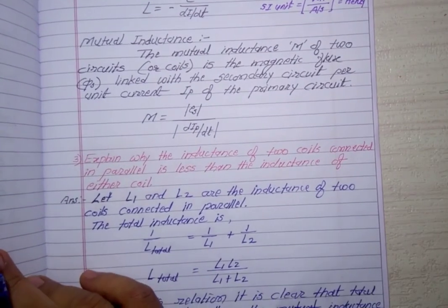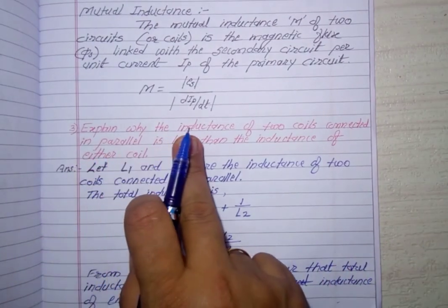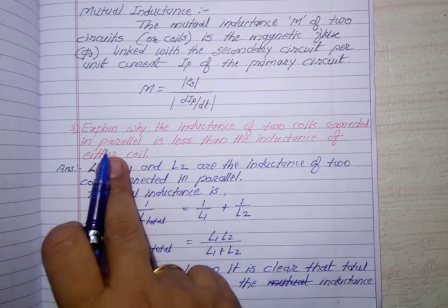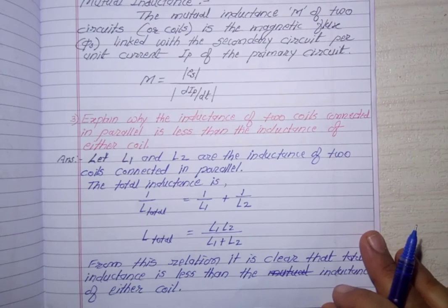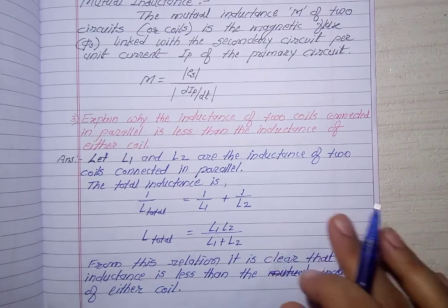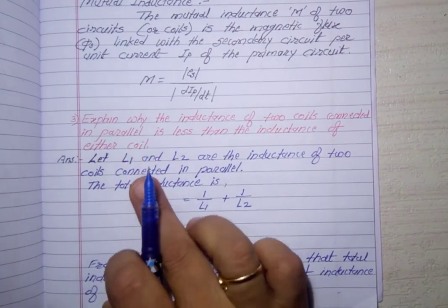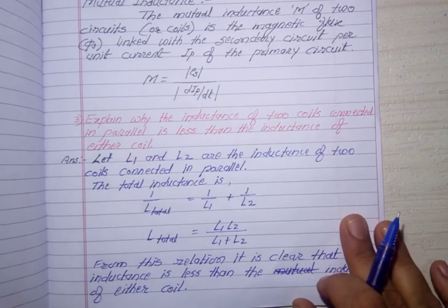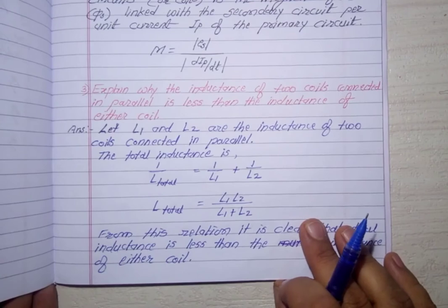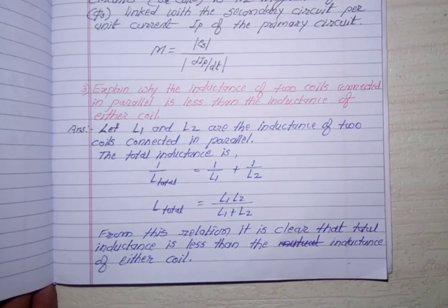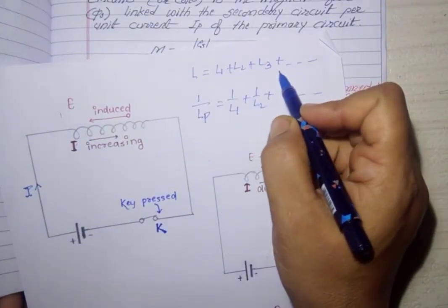The third question: explain why the inductance of two coils connected in parallel is less than the inductance of either coil. We have to show that the total inductance when two coils are connected in parallel is less than the individual inductance. The formulas for inductance connected in series and in parallel are given in your book. When inductances are connected in series, the resultant inductance is the sum: L1 plus L2 plus L3 and so on - same as resistances in series.